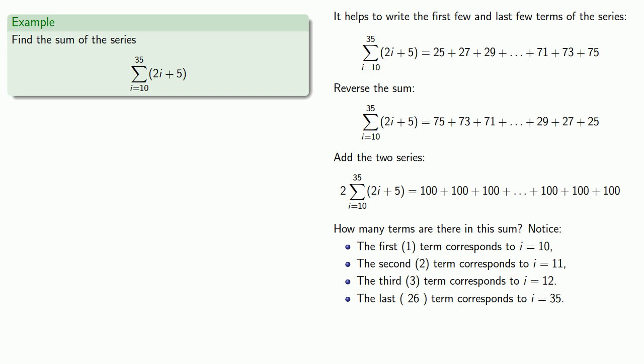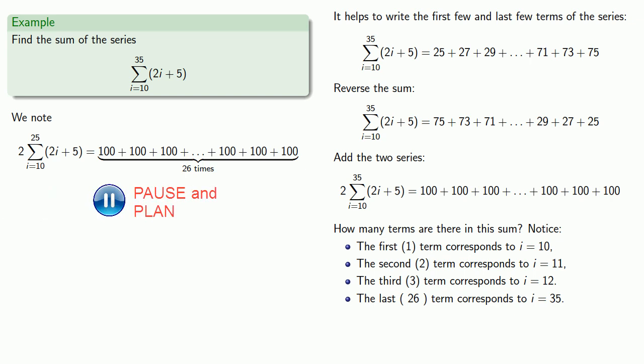And so this last term must be the 26th term. And so what we have is we have 100 added together 26 times. And so twice our series sum is 26 times 100.